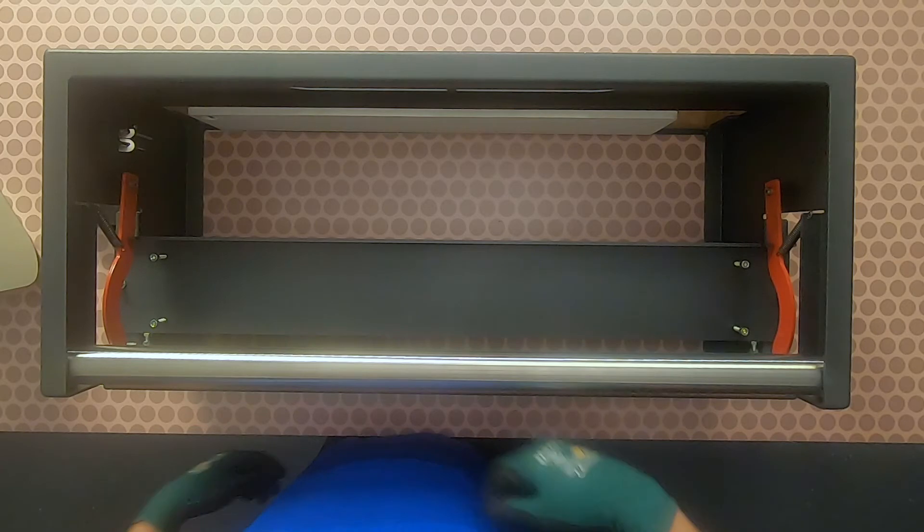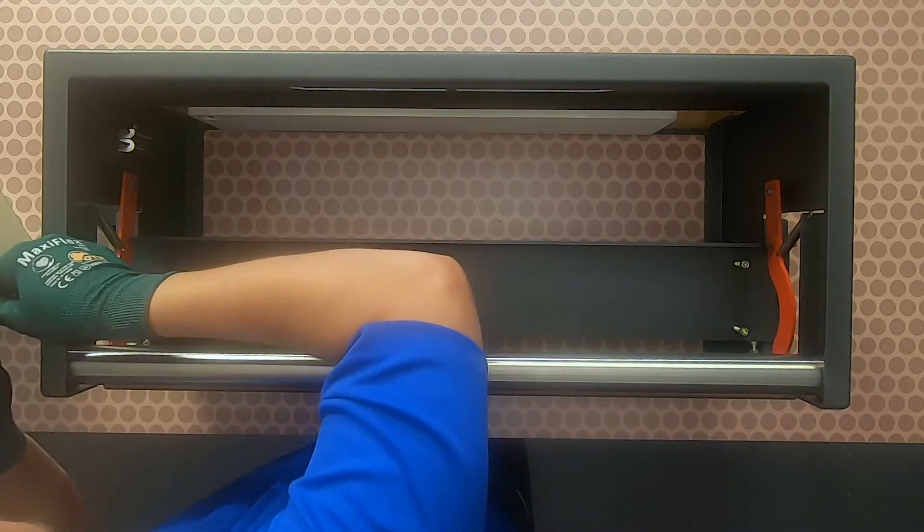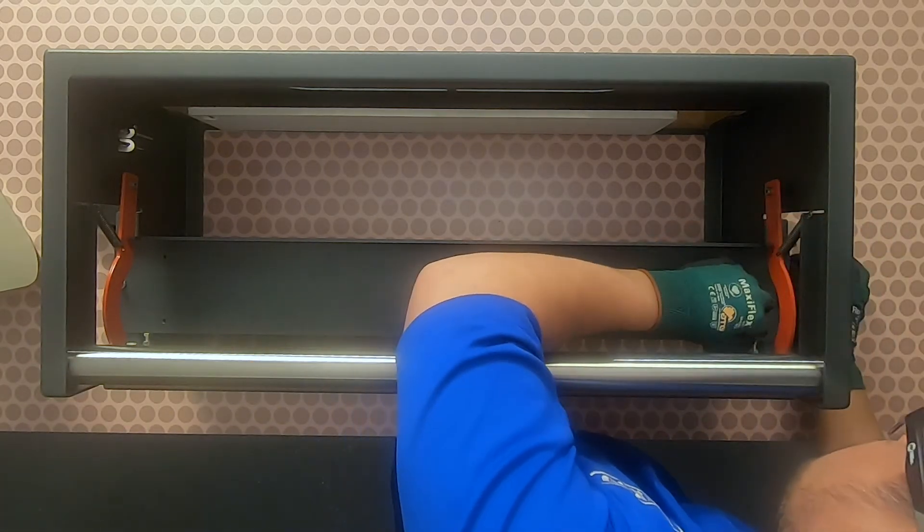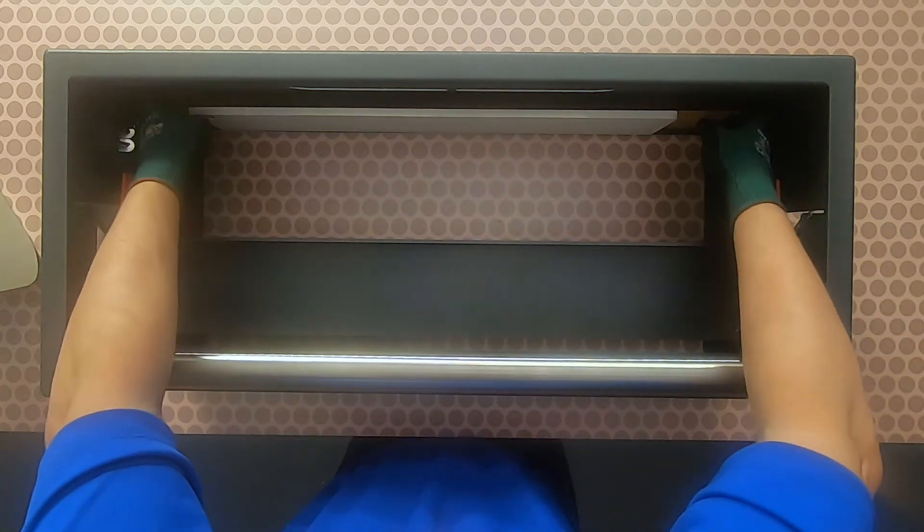Next, change out the punch board to the desired finger geometry by unscrewing the four hex bolts. Because we positioned the punch block in the vertical position, we can install a punch board with longer fingers.